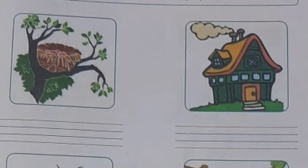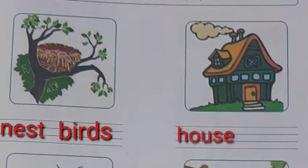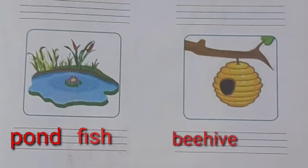The first picture — this is a nest. Who lives in it? Birds. The second picture — this is a house. Who lives in it? People, like us. The third one is a pond. Who lives in it? Fish. And the other one — beehive. Who lives in it? Bees. Enjoyed it!